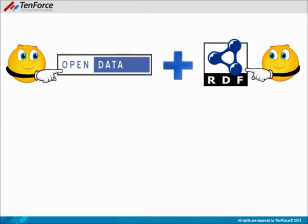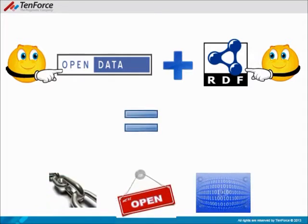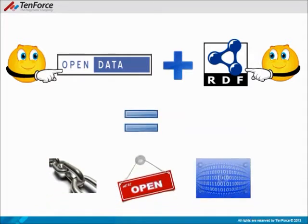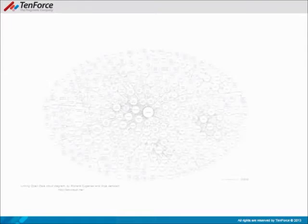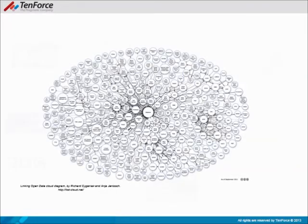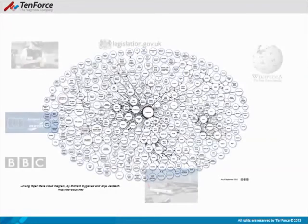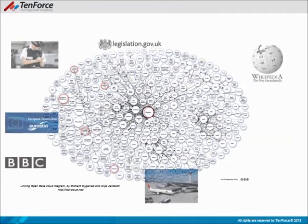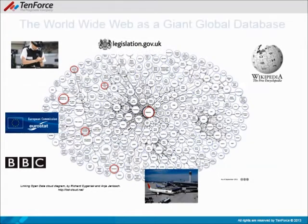But is it pragmatic? Are there organizations already doing it? Yes, there are. Every single node in this diagram represents an organization publishing huge amounts of data in RDF, linked together — from Wikipedia to police crime statistics and from BBC News to Eurostat. So the web is transforming into a giant global database.